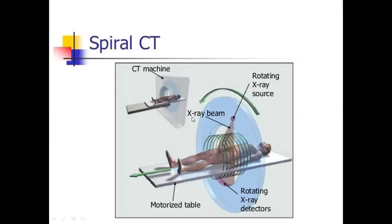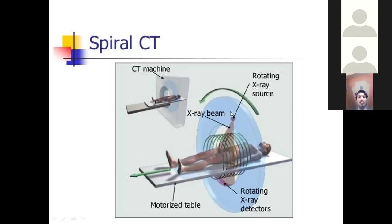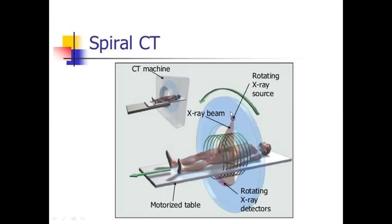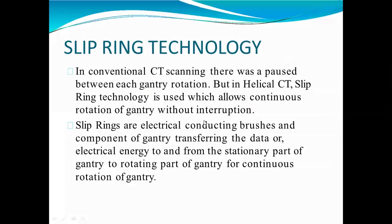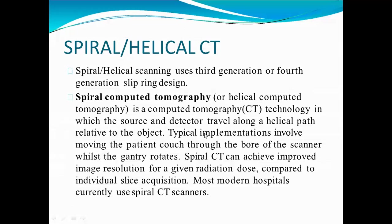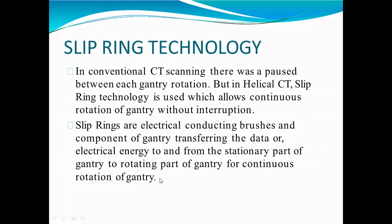So the three functions of the slip ring are: first, high voltage is used to rotate the X-ray tube; second, the gantry is made to rotate continuously; and third, the data collected from the detectors is transmitted. This is your spiral CT scan, which is used in third or fourth generation CT, where the detector and ring both travel in a helical path.